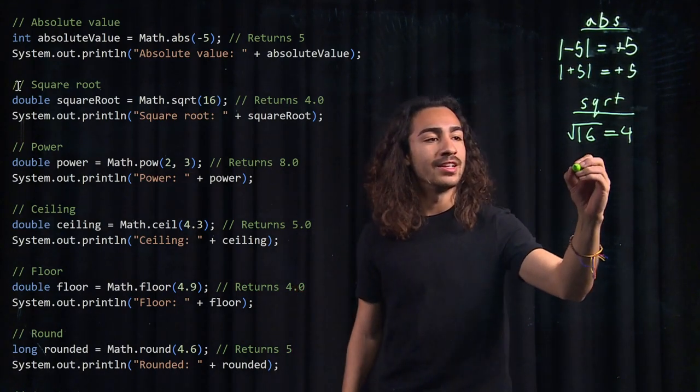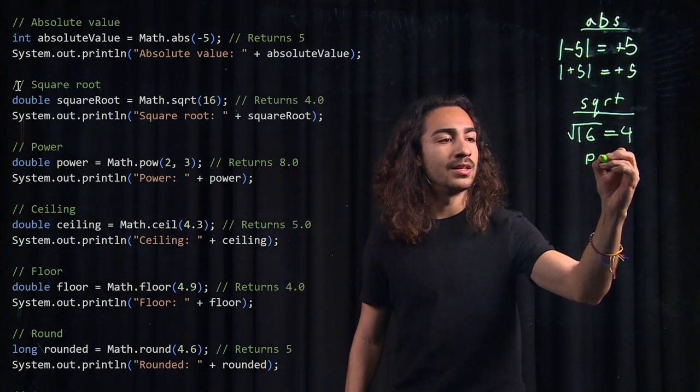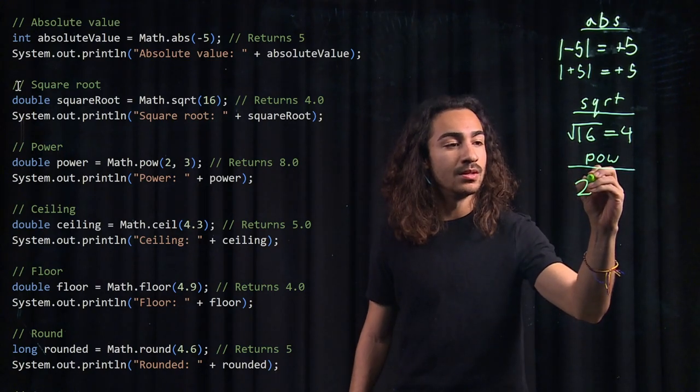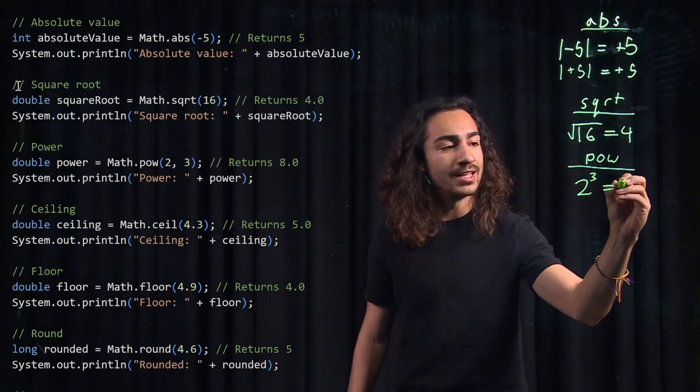For power, it's the opposite of square root. It does the power, 2 to the power of 3, which is 8.